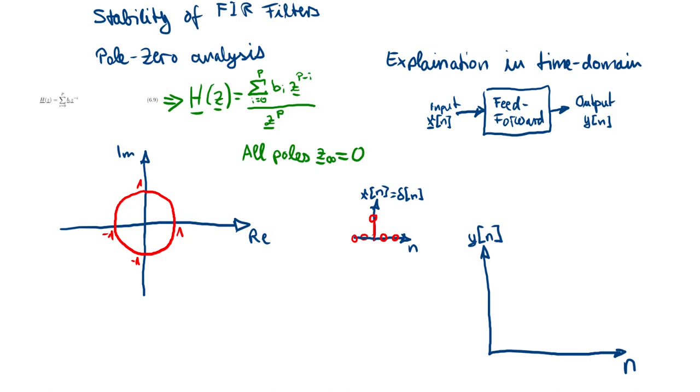And we see here that all poles are zero. So there are a number of poles and the number of poles equals the number of filter taps, so the number of delay elements in our FIR filter. But all poles are zero. And the zeros of the filter can be somewhere else. But it doesn't matter because all poles are located within the unit circle, and our FIR filter system is always stable.